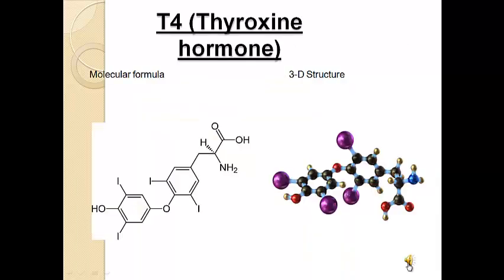Thyroid hormone is important in cardiovascular development and homeostasis. T4, also known as thyroxine, is a thyroid hormone usually taken to correct the levels of thyroid hormone deficiencies, also known as hypothyroidism. The drug is shown here in its molecular and structural form, and is given in this research paper to test for increased response to left ventricular remodeling after a heart attack.